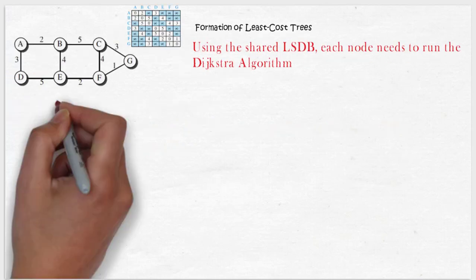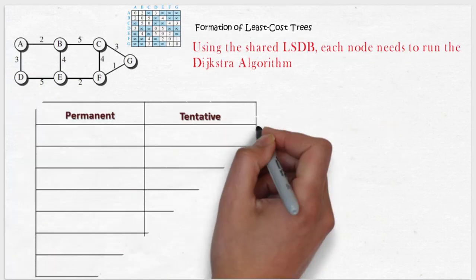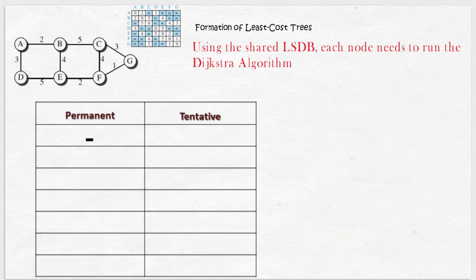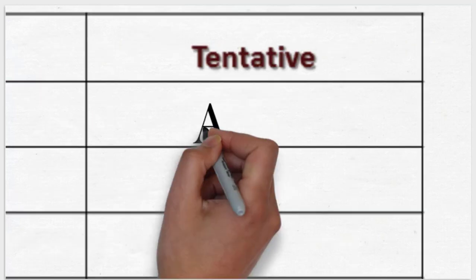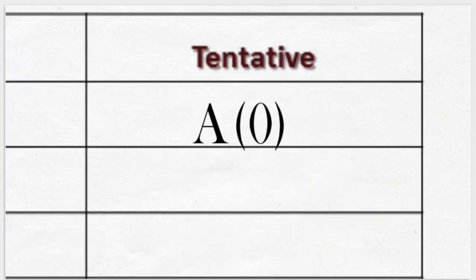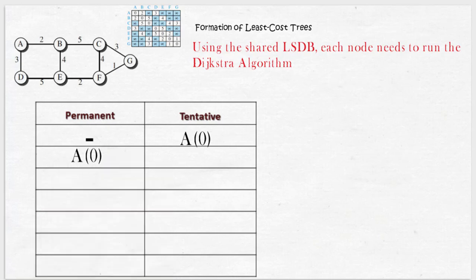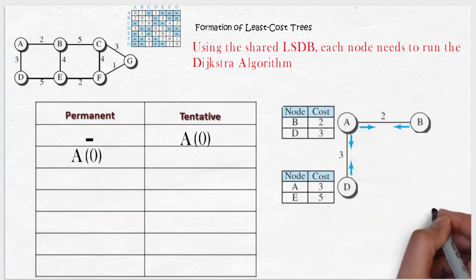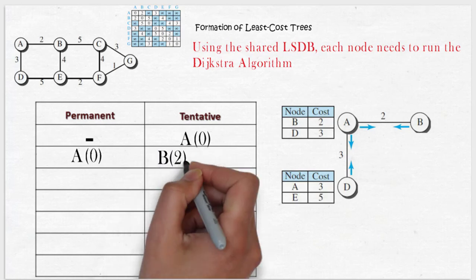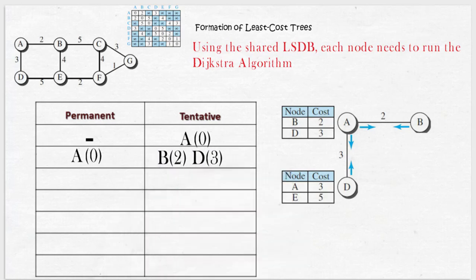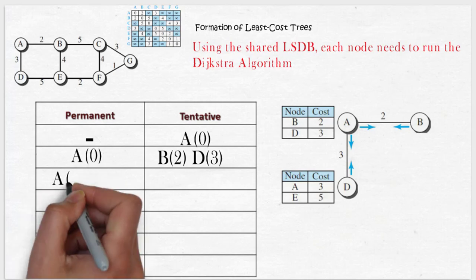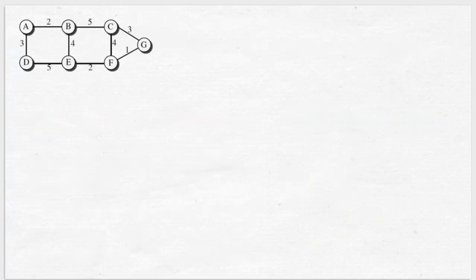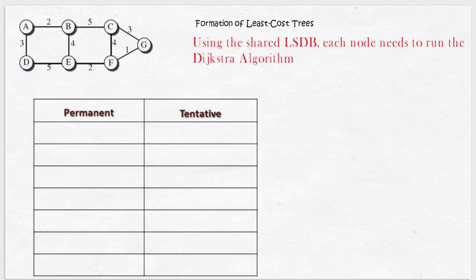While finding the least cost from node A to other nodes, initially the source node A is taken as tentative. Because it remains the same place, the cost is zero. Then move it to permanent. Adjacent nodes of A, that is B and D, are taken as tentative. Now the least cost from these two links is actually the link to B, so moving node B to permanent and proceeding to further nodes.